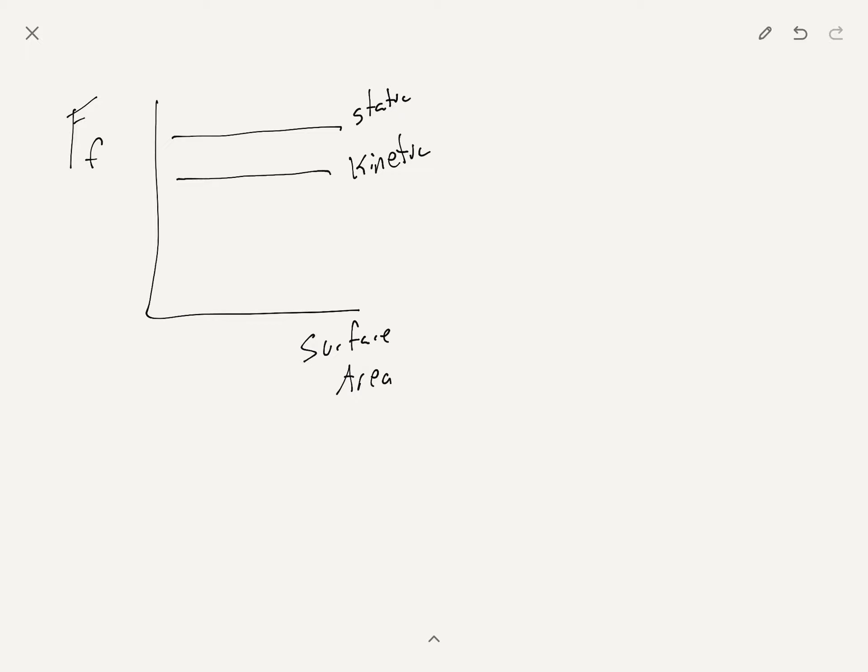So this is just saying that there is no relationship between force of friction and surface area. Therefore, it does not play a role in our equation that we're eventually going to develop. So then lastly, we're going to have our force of friction versus surface type.